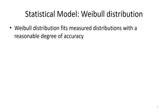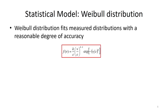Now let us study the statistical model which is Weibull distribution. Why Weibull distribution? Because this distribution fits measured distributions with a reasonable degree of accuracy. The probability distribution function can be written as: f(v) = (k/c) · (v/c)^(k−1) · exp[−(v/c)^k], where k is the Weibull shape factor and c is the scale factor.